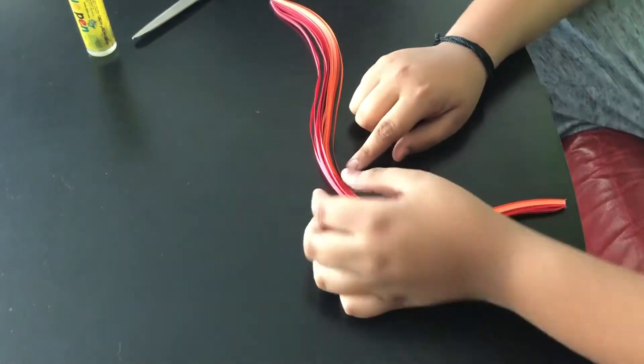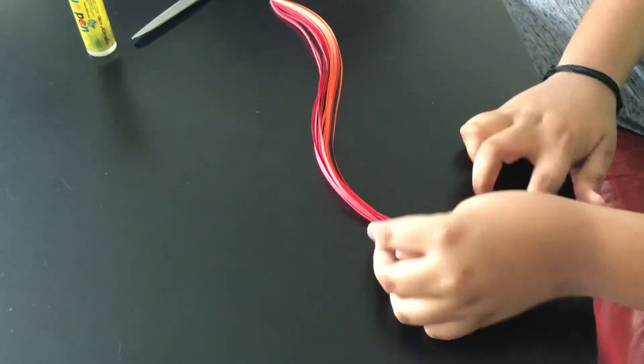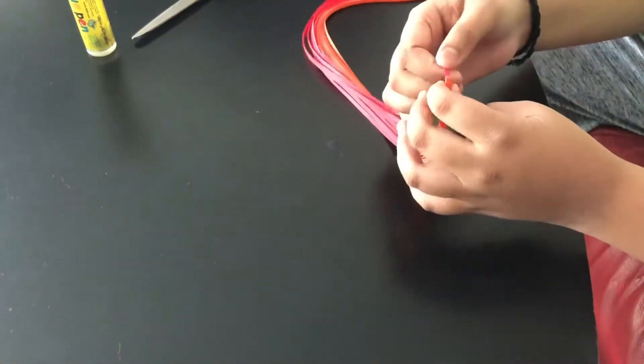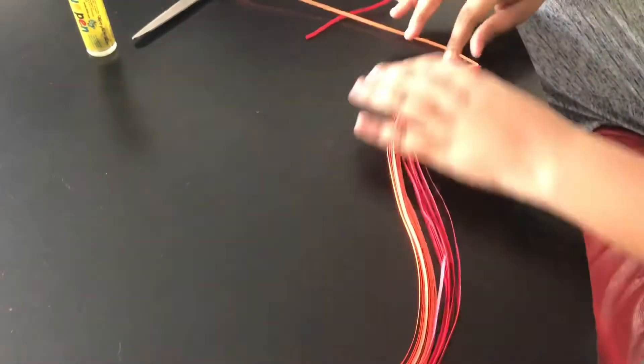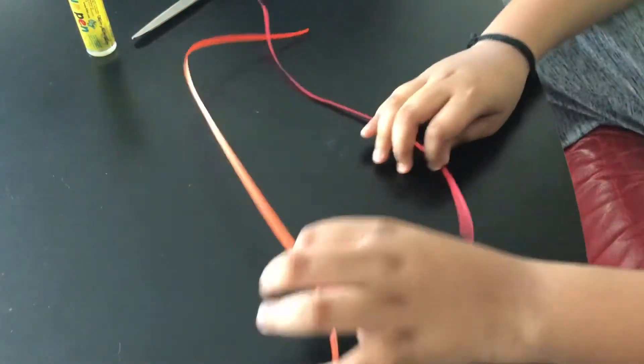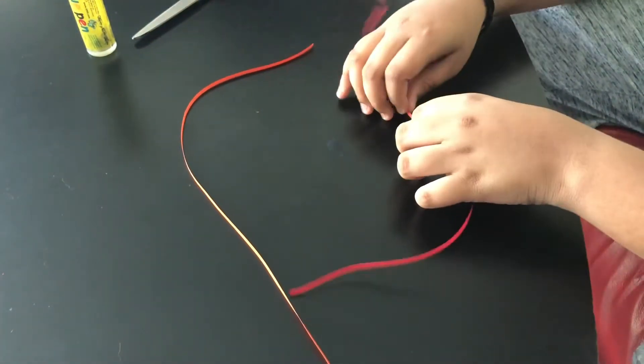So guys, today I am going to do two colors. I am going to do a red and an orange. So let's just take out one piece, one red and one orange. Set this aside. Now we have our red and orange strips. Now we can start by folding them into halves.